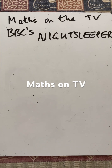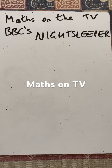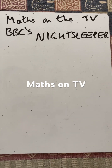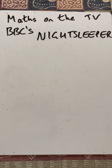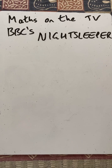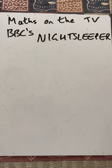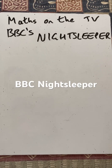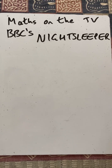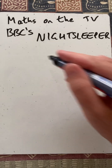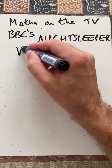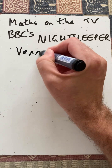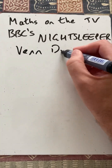Hello and welcome to Martin Maths, doing a short on maths we've seen on the TV. There's BBC's show Night Sleeper, about a train, and the journalist talks about a Venn diagram.